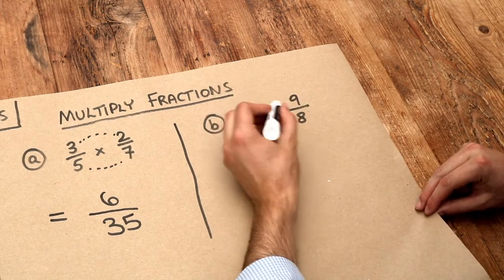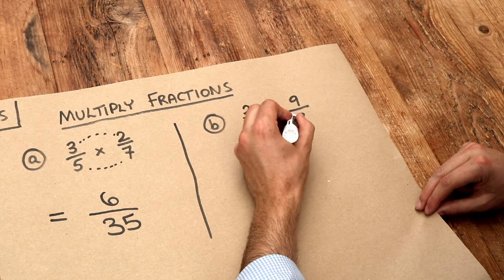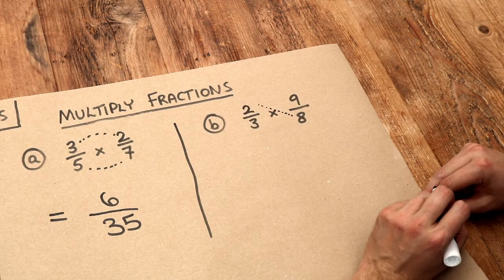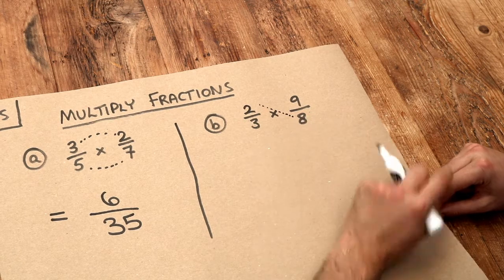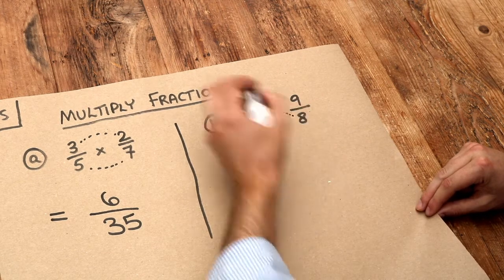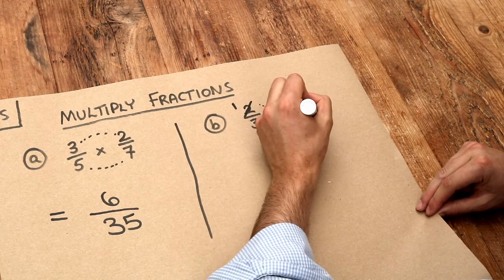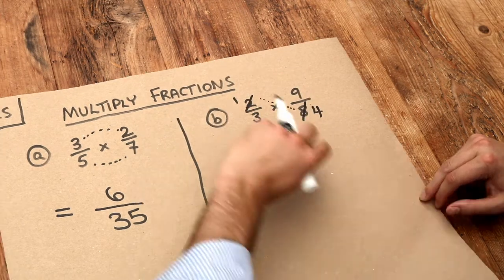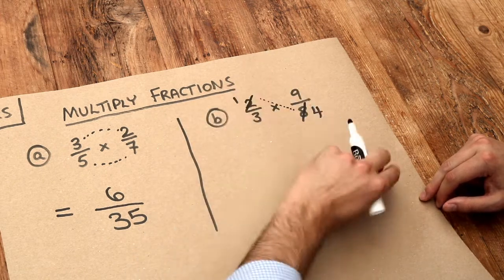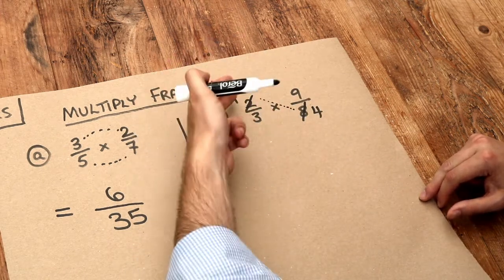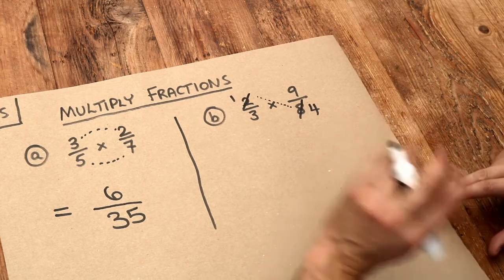And what we do is we identify common factors diagonally. So the 2 and the 8, they have a common factor of 2, so we can divide them both by 2. So this becomes 1, and this becomes 4, because 8 divided by 2 is 4. Now although I've changed each individual fraction, because 2 thirds is clearly not the same as 1 third, the overall result remains the same.